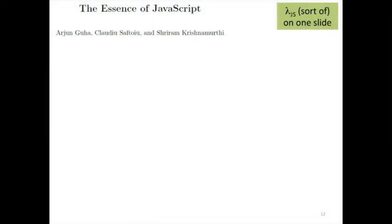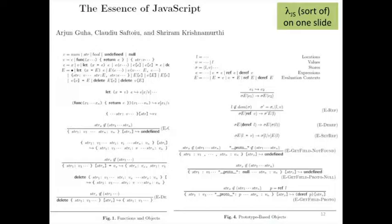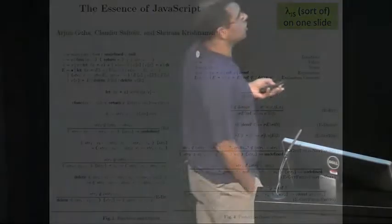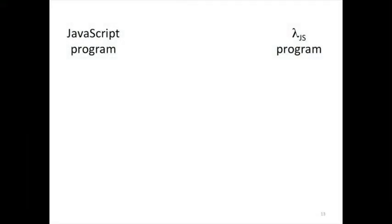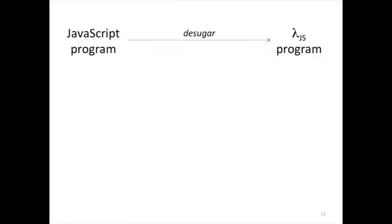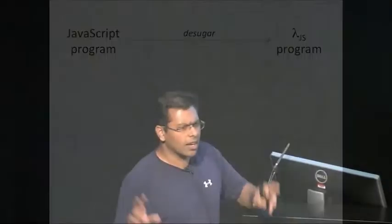So we said, okay, well, we want to prove soundness, so we'd like to actually write down a semantics against which we can prove soundness. So we wrote down a semantics. We all know how to write down a semantics. Everybody in this room can write one down in an hour or so. So we called it the essence of JavaScript, always helps to be bold. So here's more or less the essence of JavaScript. I don't expect you to read it. It's a semantics, like we can all write down.